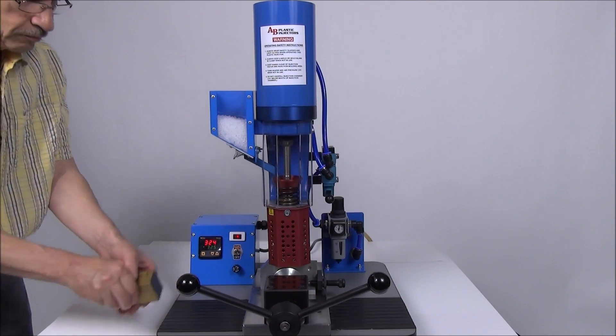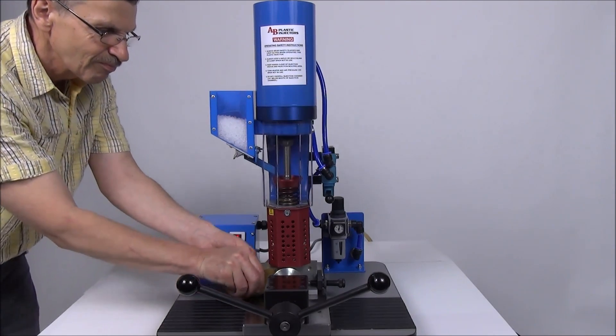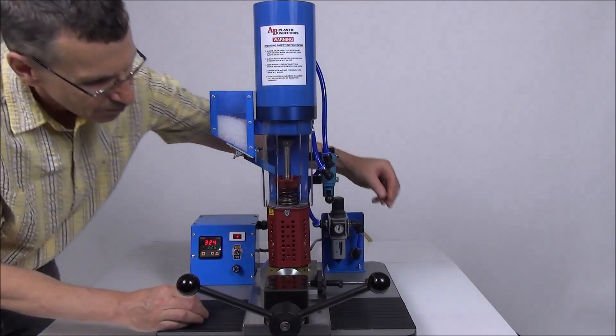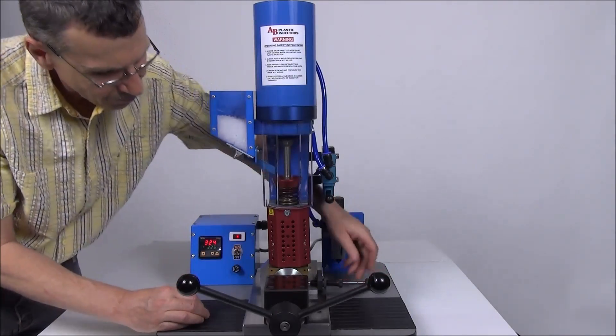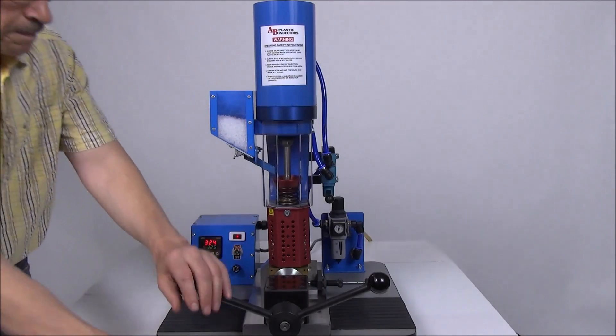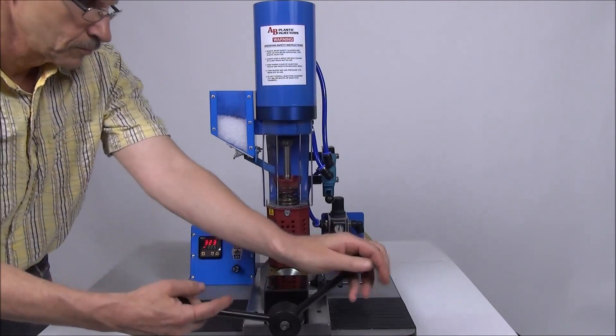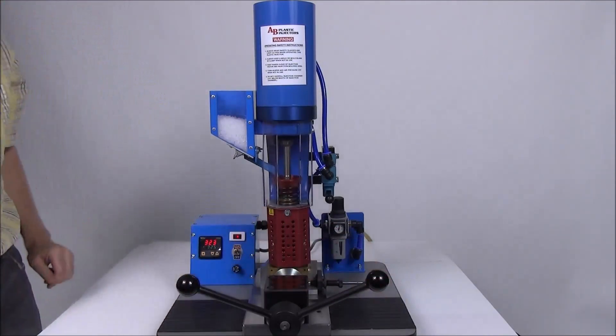Set the mold into the injection area and set the adjustable mold stop to align the mold orifice with the sprue center line. Clamp the mold by rotating the clamp wheel until tight. The manual clamp is capable of delivering two tons of pressure.